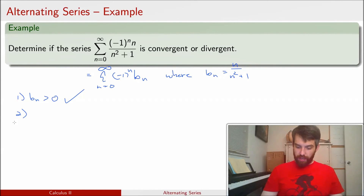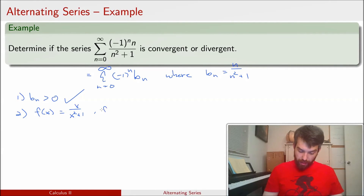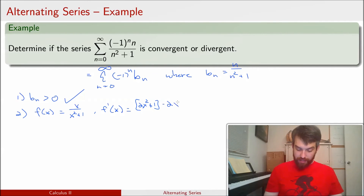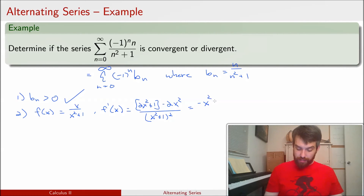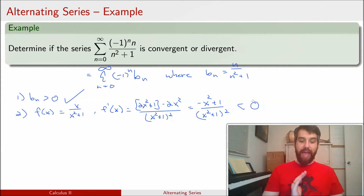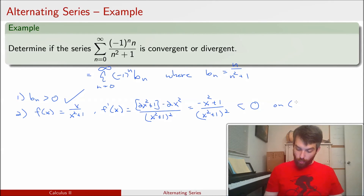Additionally, I need the b_n's to be decreasing. Consider f(x) = x / (x² + 1). Taking the derivative by the quotient rule gives (x² + 1 - 2x²) / (x² + 1)², which simplifies to (-x² + 1) / (x² + 1)². This is less than 0 when x > 1, so f is decreasing on [1, ∞).